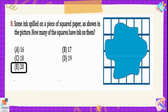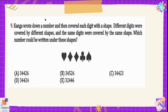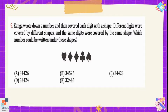Question number nine: Kanga wrote down a number and covered each digit with a shape — different digits were covered by different shapes and the same digits by the same shape. Which number could be written under these shapes? If we look at option A, it is 3-4-4-2-6, which could be a possible option because heart, spade, and spade have the correct pattern — diamonds share the same number (4-4).